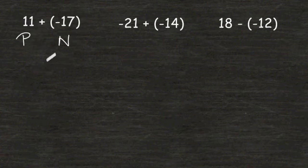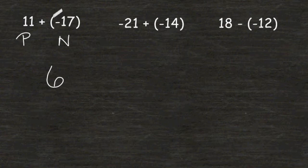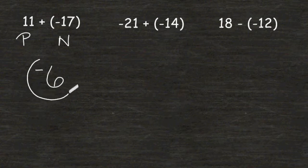Because the signs are different, we have to find the difference of 17 and 11, which is 6. And because the absolute value of negative 17 is greater than the absolute value of 11, we have to use the sign of this value in the answer. So 11 plus negative 17 is equal to negative 6.